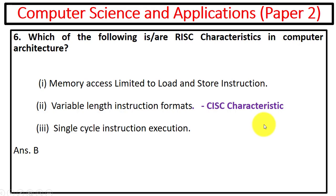Next question is which of the following are RISC characteristics in computer architecture. You know we have in computer architecture RISC and CISC. First we have memory access limited to load and store instruction, variable length instruction format, and single cycle instruction execution. You can see this one is the characteristic of CISC, as you know they use variable length instruction format. And one and three are the RISC characteristics, so option one and three are true for this question.